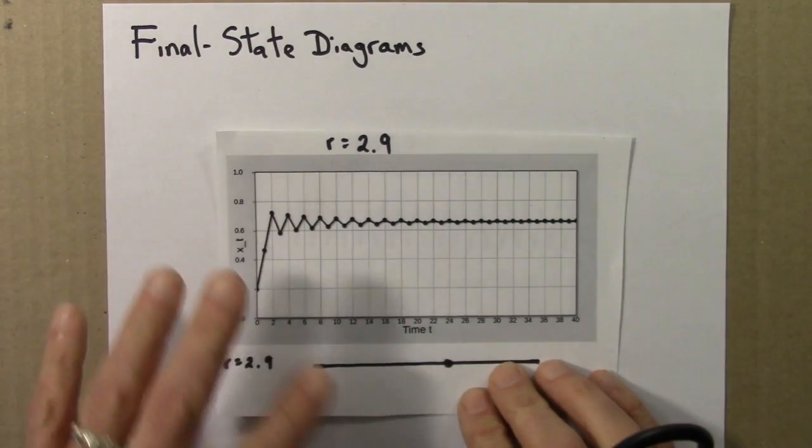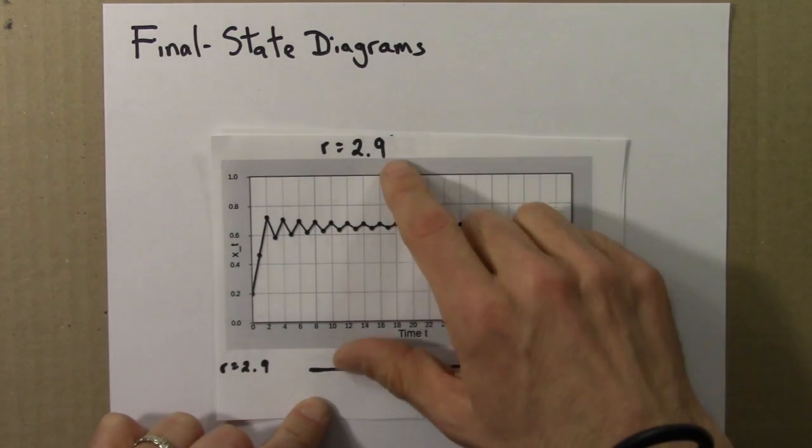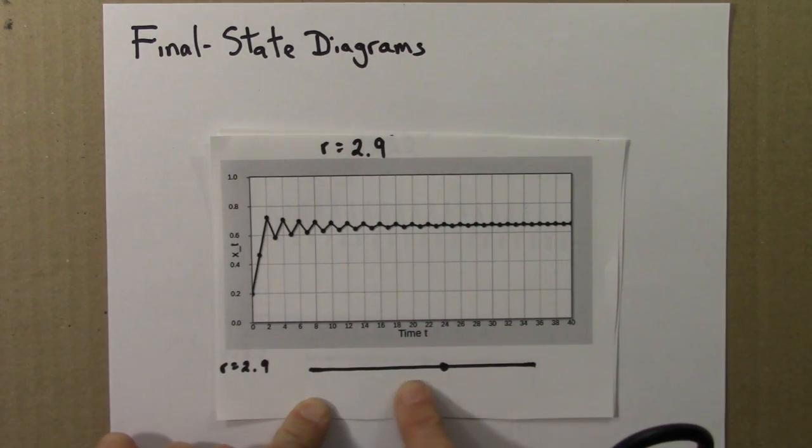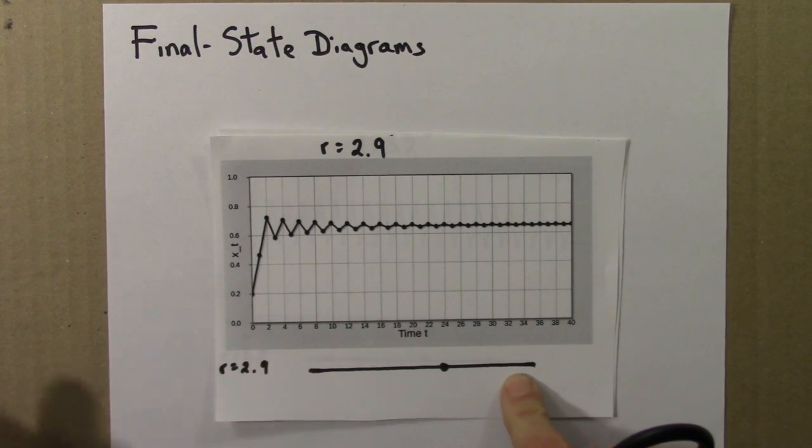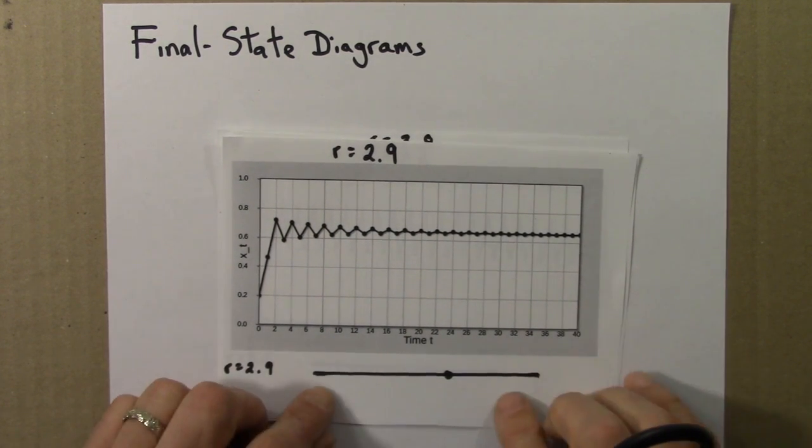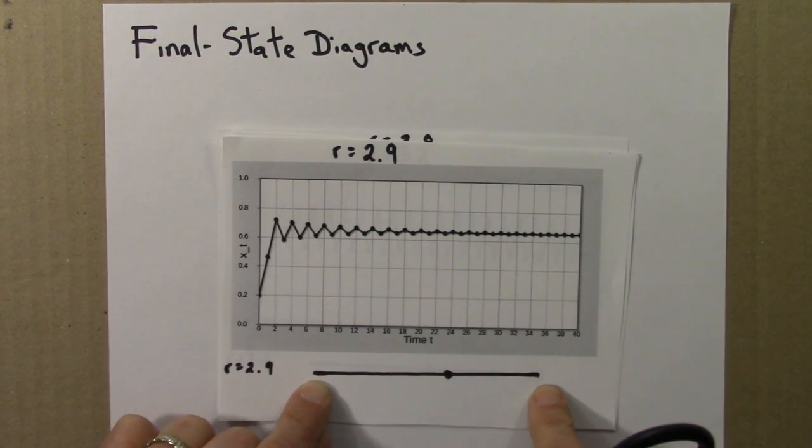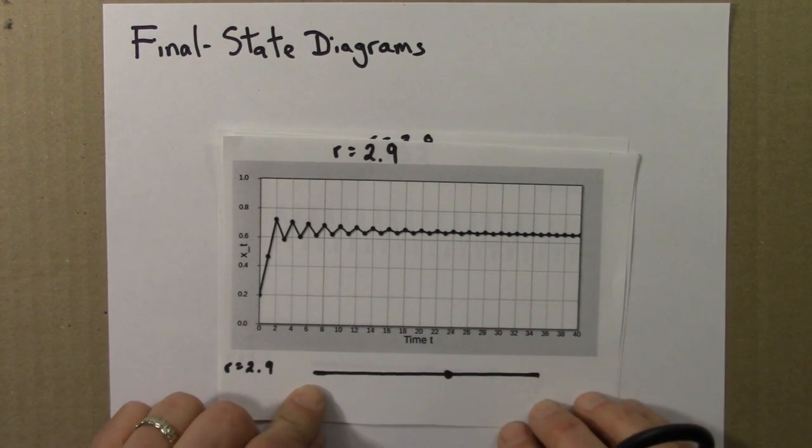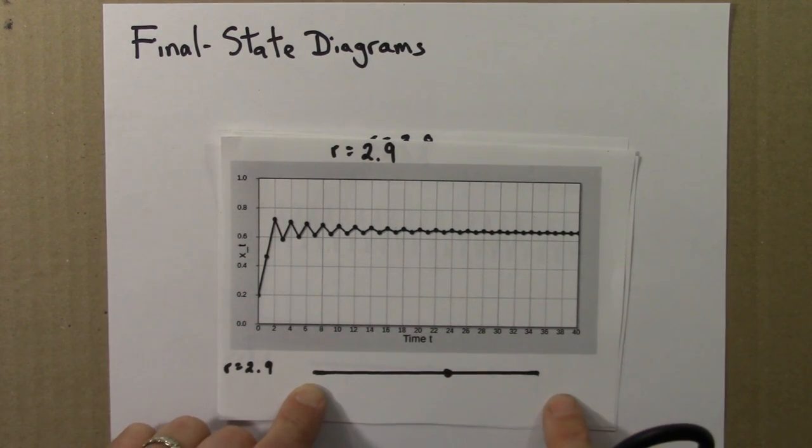So before we go on, I'll recommend doing the next quiz, which is have you practice drawing some final state diagrams for a few different R values. It should be pretty quick, and I'll just make sure your brain is back in the gear, back in the mood of thinking about the discrete logistic equation. So give those a try, and then we'll put these lines together and make a bifurcation diagram.